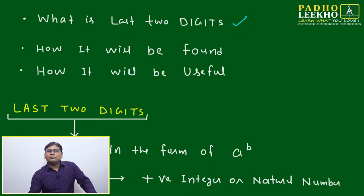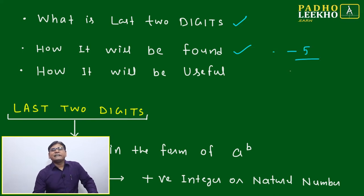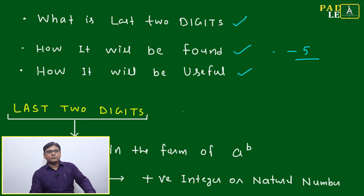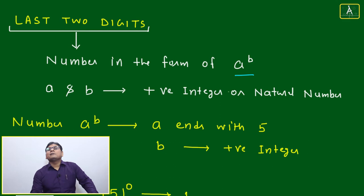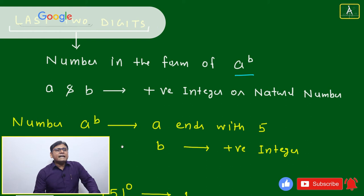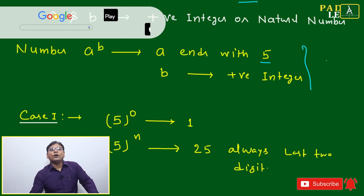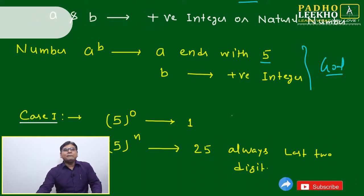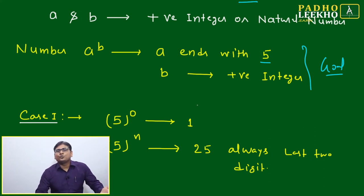In this session, I will discuss what the last two digits are and how they can be found if the number ends with five. I am considering the case of numbers ending with five, and what the applications are. This is applicable for expressions in the form a to the power b, where a and b are positive integers, and a ends with five.